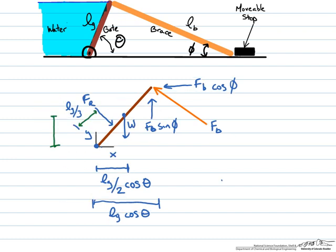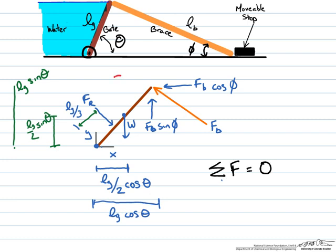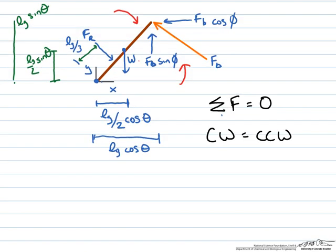The two vertical distances of interest are: from the origin to the center of the gate where the weight acts, which is Lg/2 sin theta, and from the origin to where the brace acts at the top of the gate, which is Lg sin theta. We can now write our force balance on the gate, knowing the sum of all forces must equal zero — the clockwise moments must balance the counterclockwise moments. The water force Fr times its moment arm Lg/3 is one clockwise term.